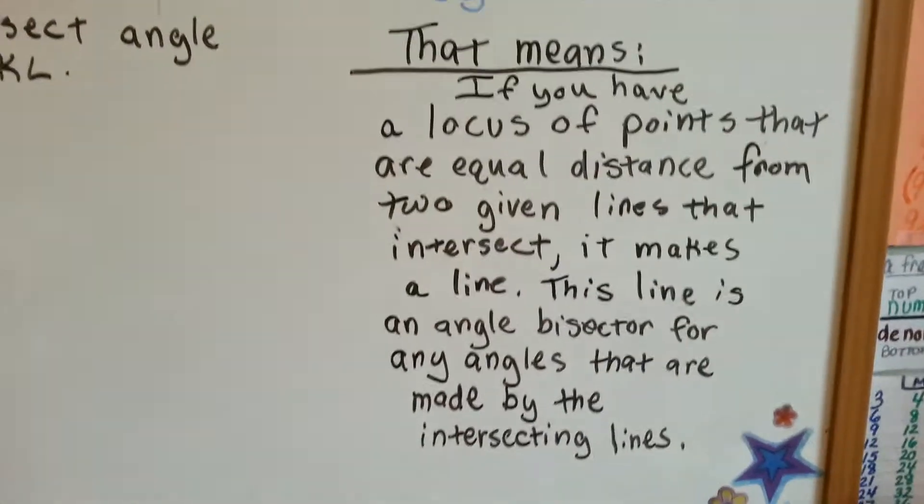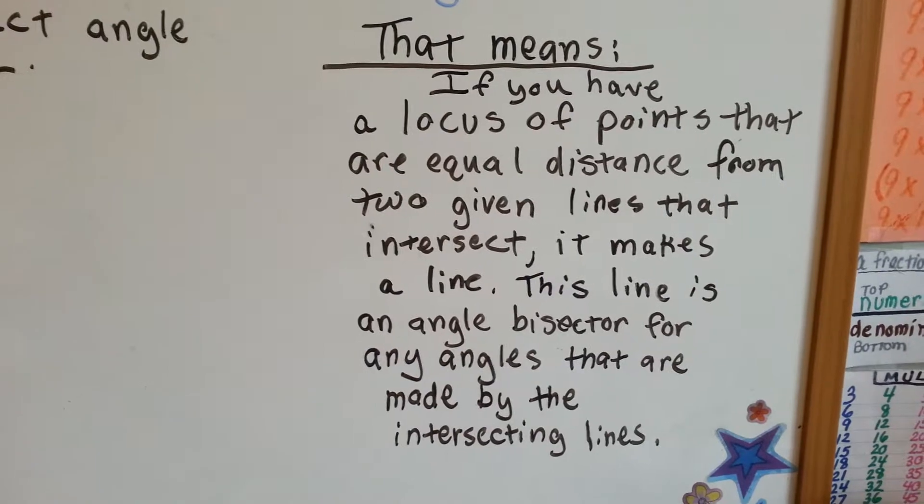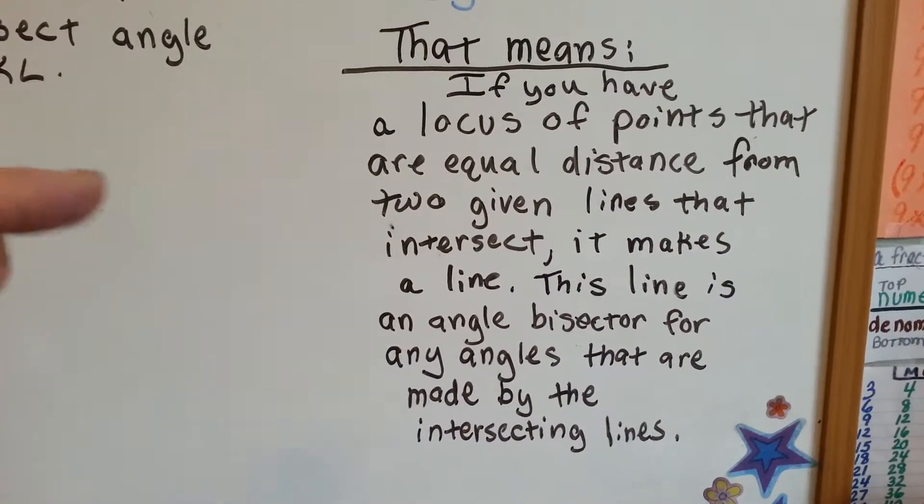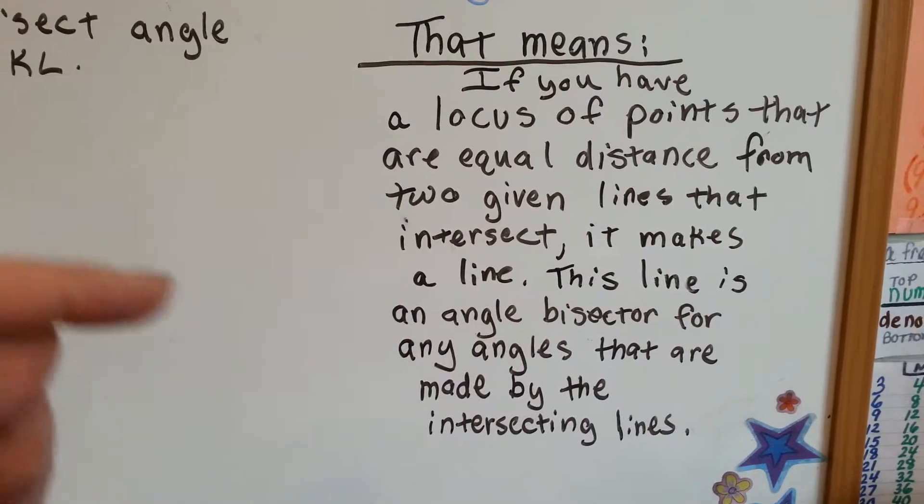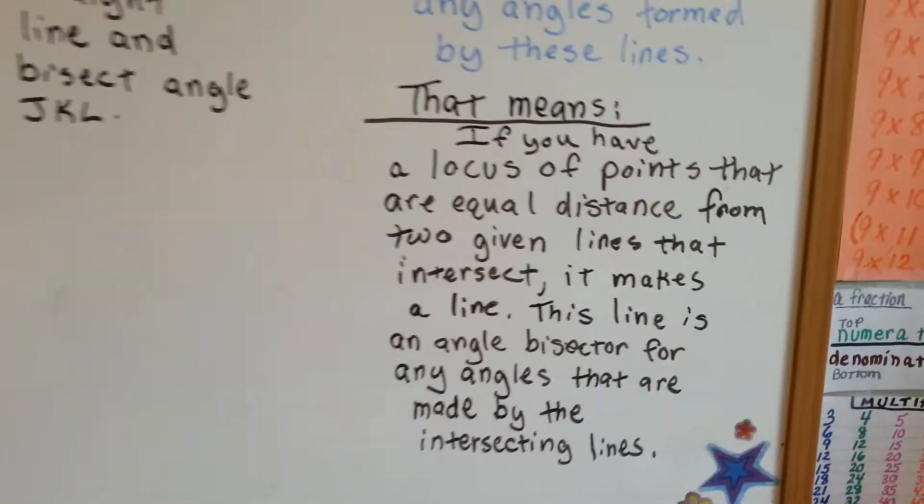That means, if you have a locus of points that are an equal distance from two given lines that are intersecting, then it makes a line. And this line will become an angle bisector for any angles that are made by those intersecting lines. Alright?